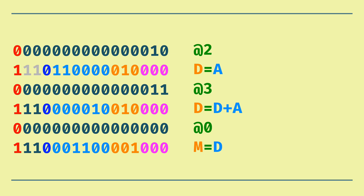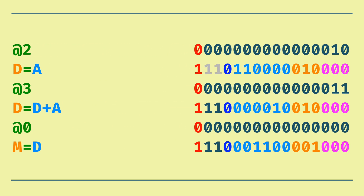Of course nobody wants to write programs by writing a bunch of ones and zeros. If you recall our Machine Language the Hard Way course, you might remember when we hand-disassembled some machine code into a more human-readable form. What we need to do is write a program that does this in reverse — start with that human-readable form and generate the machine code programmatically. That's what an assembler does, and that's what you'll be doing over the next two weeks or so.